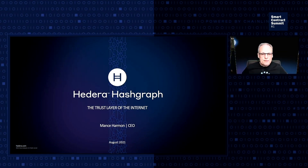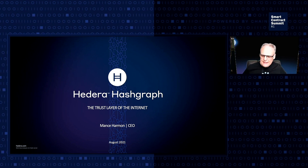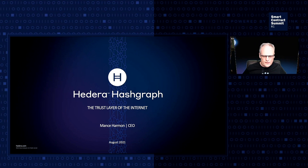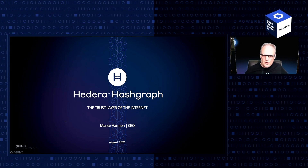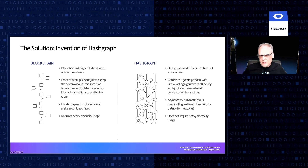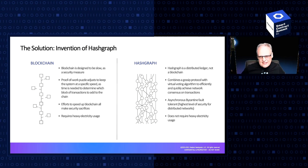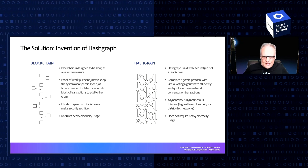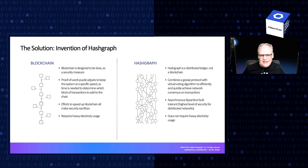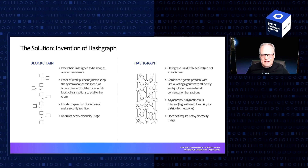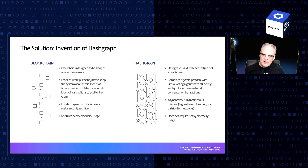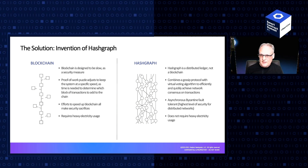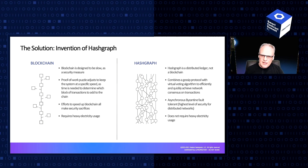This is going to be starting from scratch for those that have never heard about us. We don't use blockchain. We use Hashgraph. Hashgraph is a consensus algorithm that was created by Dr. Lehman Baird, who's my co-founder. And Hashgraph achieves something that nothing else in the market achieves: asynchronous Byzantine fault tolerance, which is the theoretical limit of security at the consensus layer. It's the best that one can achieve. There's nothing better than ABFT.